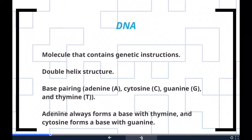The DNA molecule consists of two strands that wind around each other like a twisted ladder. Each strand has a backbone made of alternating groups of sugar and phosphate. Attached to each sugar is one of four bases: adenine, cytosine, guanine, or thymine. The two strands are held together by bonds between the bases — adenine pairs with thymine, and cytosine pairs with guanine.